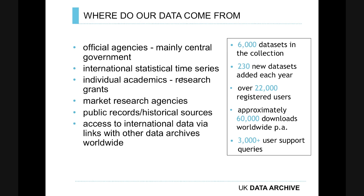A lot of our data comes from central government agencies like the Office of National Statistics, the Home Office, and the Department of Health, with important government series dating back to 1960. For example, what was called the Family Expenditure Survey combined with a food survey from the 1960s. We provide access to statistical time series, macro data banks from international organisations like the World Bank and IMF. We also receive grant data from research projects — when an academic is funded by the Economic and Social Research Council, they have to offer data, which can be anything from surveys to qualitative data, sets of interviews, or psychology experiments.